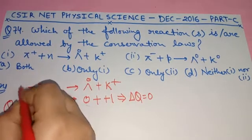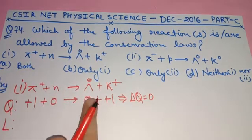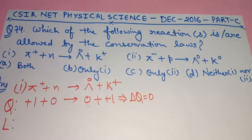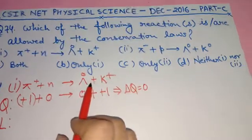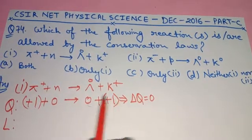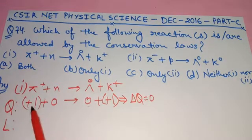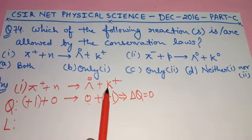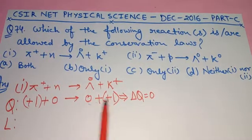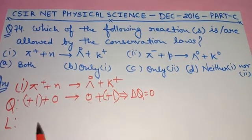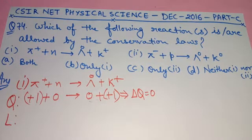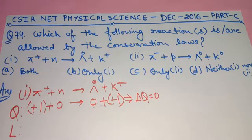Let's check the first reaction: pi positive plus neutron gives lambda naught plus k positive. Let's check the charge. Pi positive has charge +1, neutron has charge 0, so the total charge of reactants is +1. Lambda naught has charge 0, k positive has charge +1, so the total charge of products is also +1. The difference is 0, so charge conservation is satisfied.